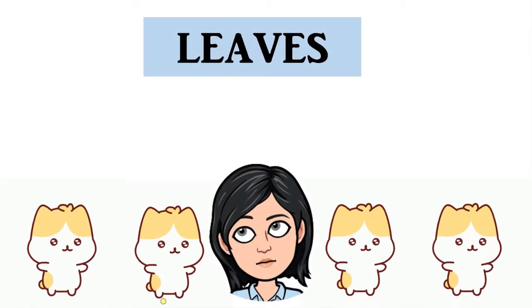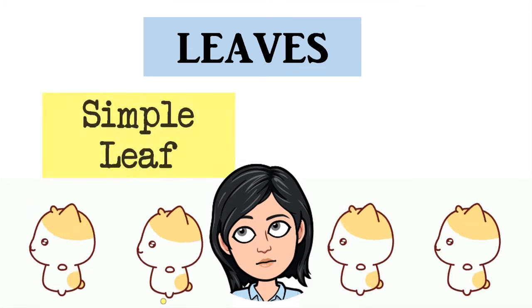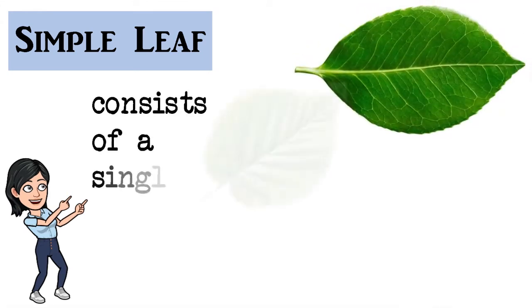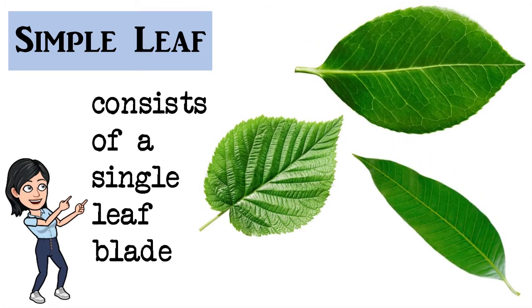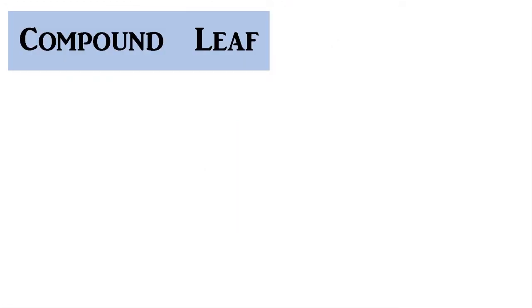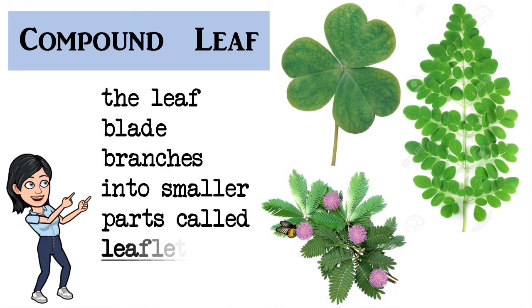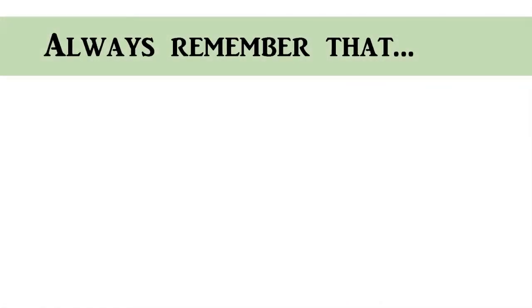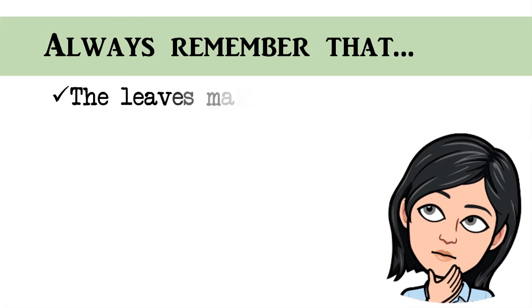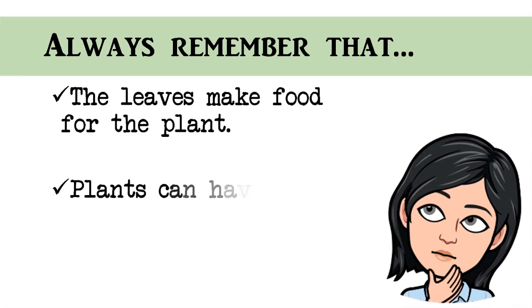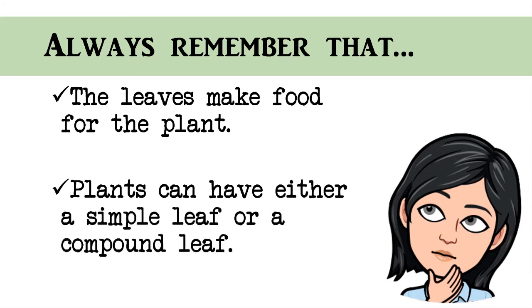Leaves come in many shapes and sizes. Leaves can be simple or compound. A simple leaf consists of a single leaf blade. A hibiscus leaf and a mango leaf are examples of simple leaves. For a compound leaf, the leaf blade branches into smaller parts called leaflets. Clover and mimosa plants have this type of leaf. Some fern plants have compound leaves too. We should always remember that the leaves make food for the plant. Plants can have either a simple leaf or a compound leaf.